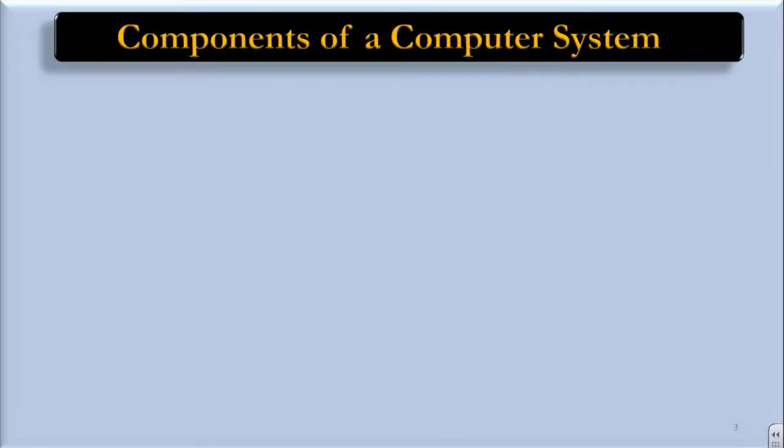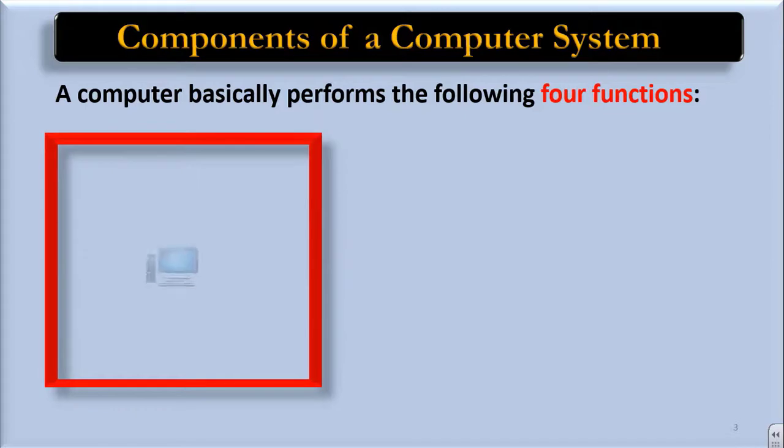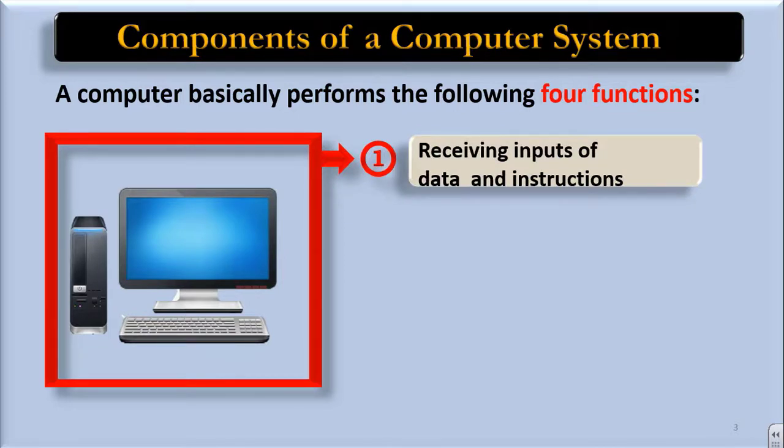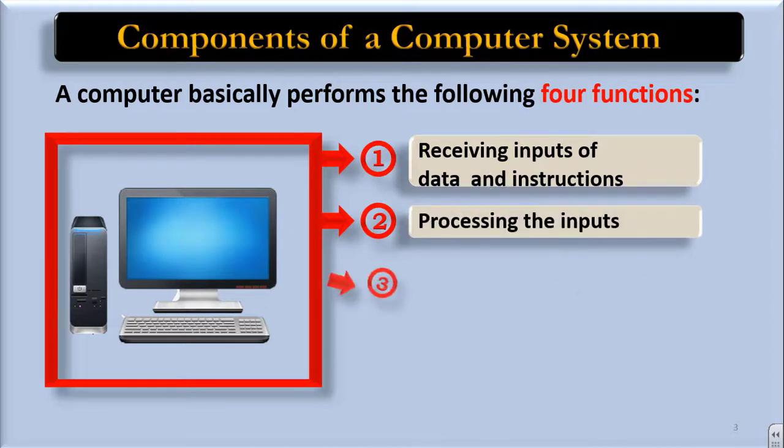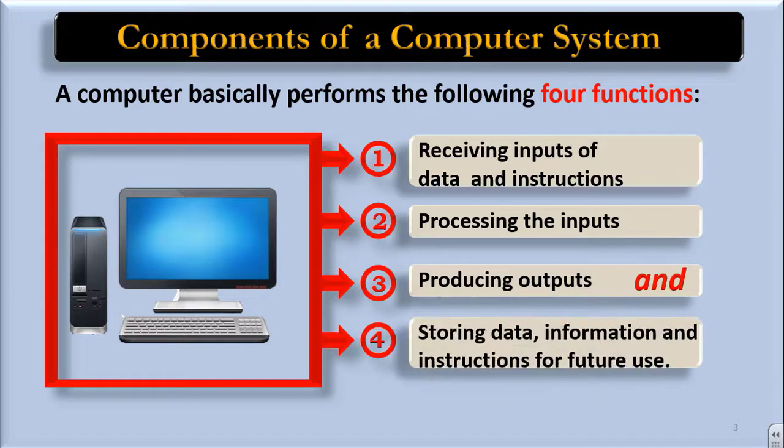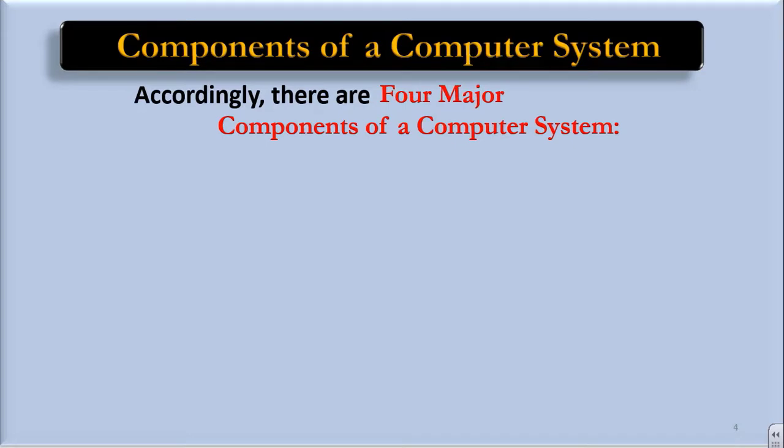Components of a computer system. A computer basically performs the following four functions: receiving inputs of data and instructions, processing the inputs, producing outputs, and storing data, information and instructions for future use. Accordingly, there are four major components of a computer system.